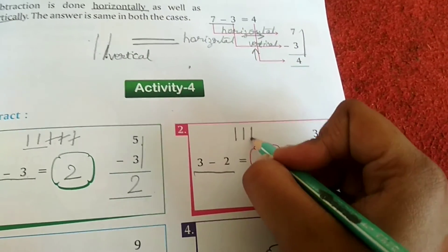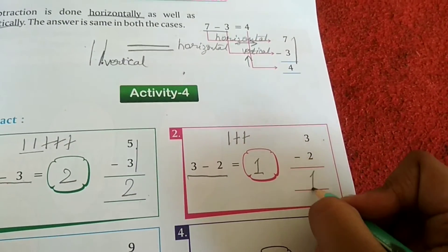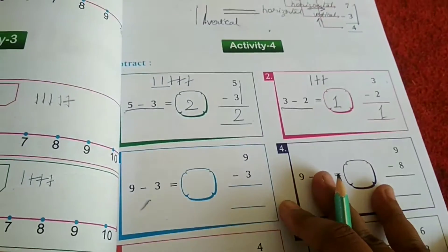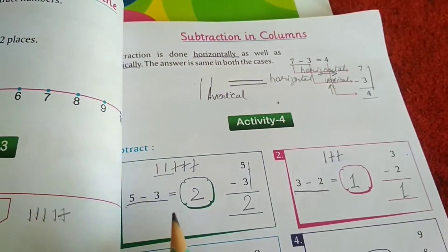3 minus 2. 1, 2, 3, minus 1, 2. That is left 1. And 3 minus 2 also 1. Right? You have to solve horizontal as well as vertical.